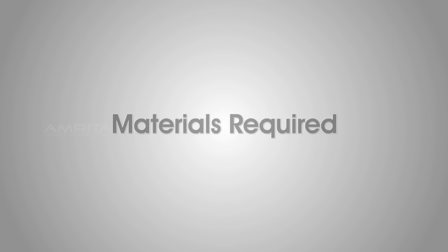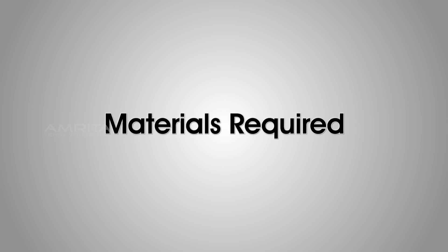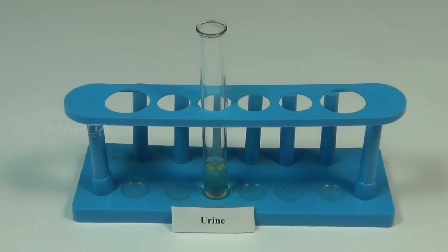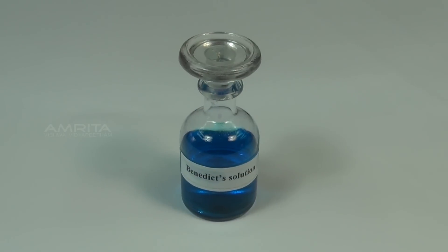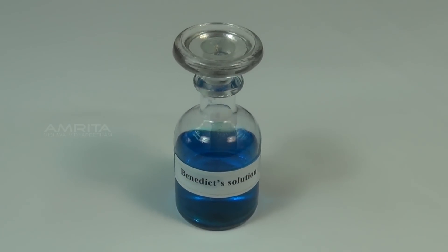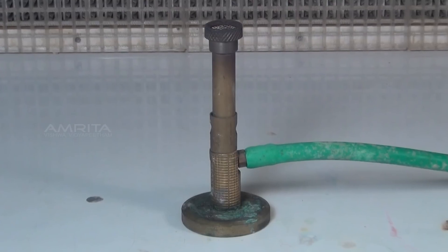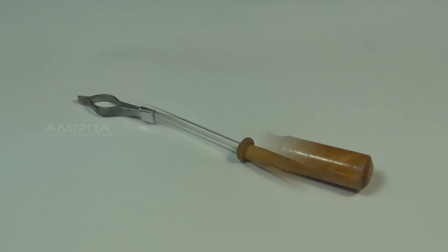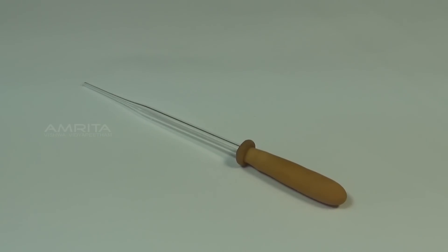Benedict's Test. Materials required: a urine sample in a test tube, Benedict's reagent, a burner, a test tube holder, and a dropper.